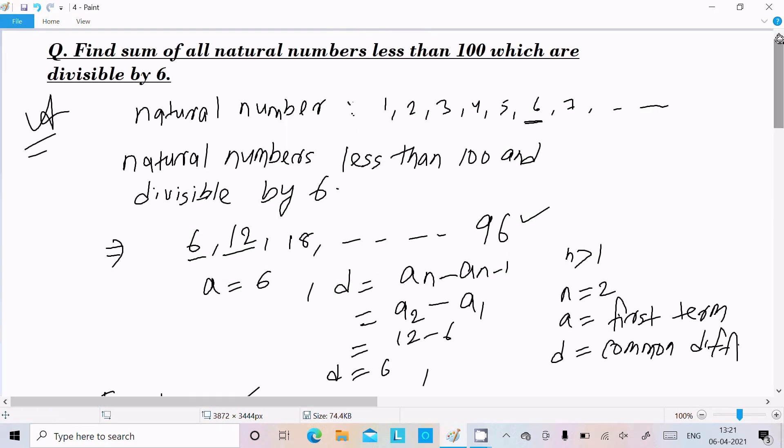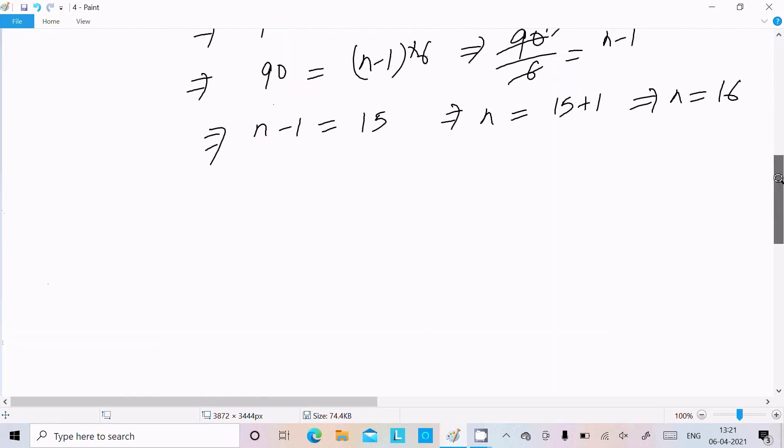So n value we calculated. Now here required sum we need to calculate. Let's write here Sn, the formula is n/2 × (first term + last term).